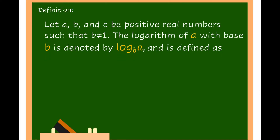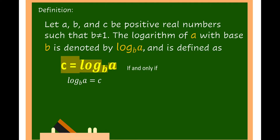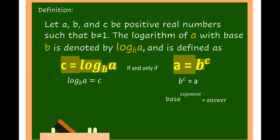By definition, let a, b, and c be positive real numbers such that b is not equal to 1. The logarithm of a with base b is denoted by log of a to the base of b, and is defined as: c is equal to logarithm of a to the base of b, if and only if a is equal to b raised to c. Wherein b is the base, c is the exponent, and a is the answer. In logarithm notation: log is logarithm, a is the answer, b is the base, and c is the exponent.